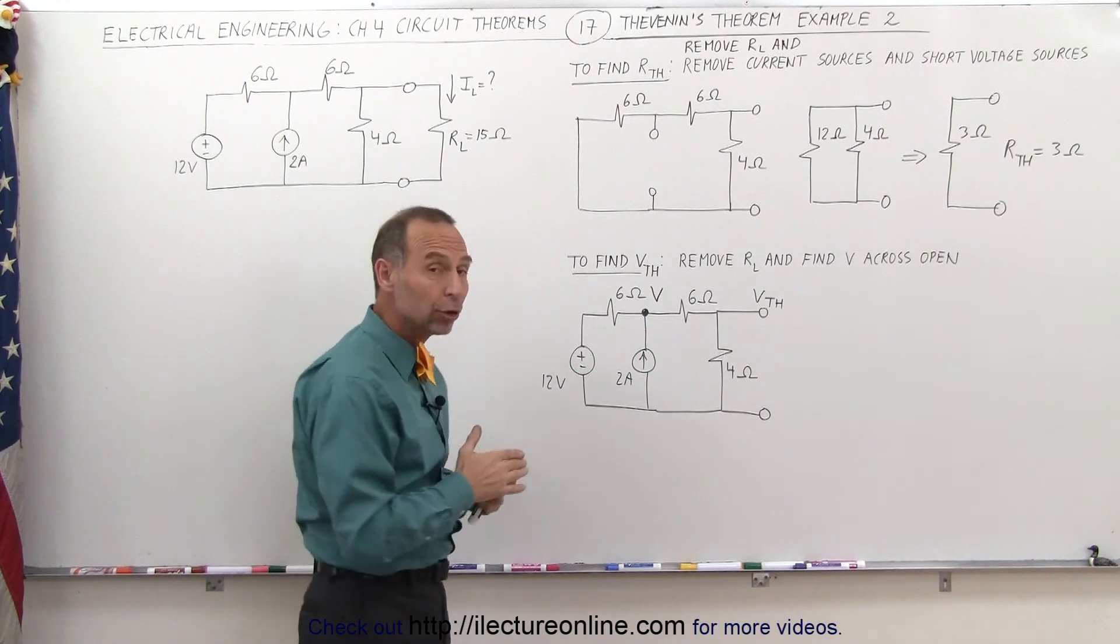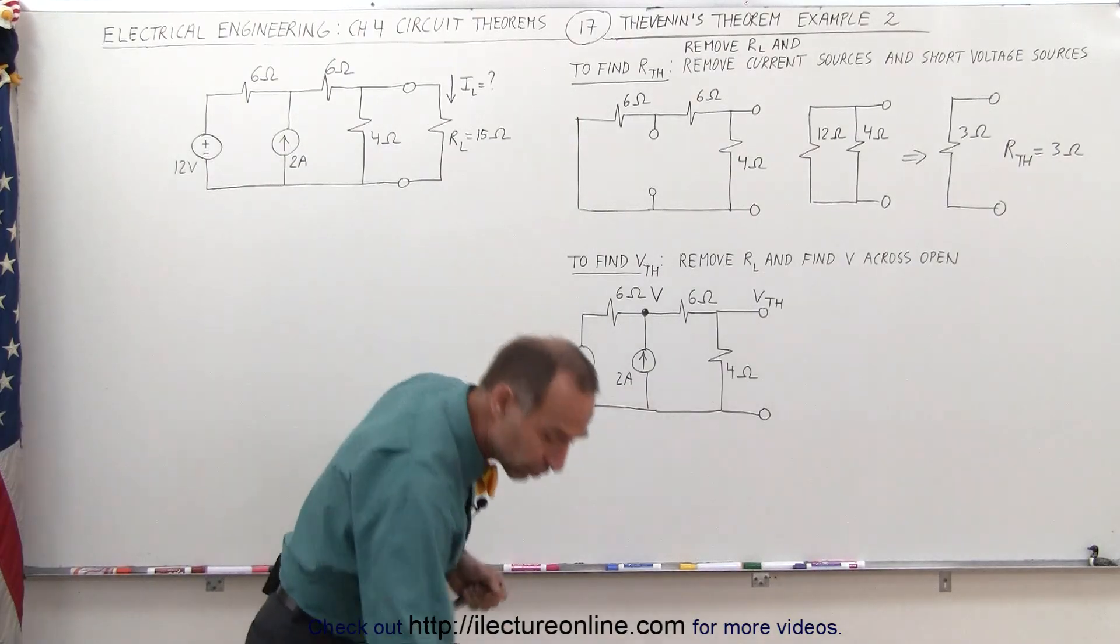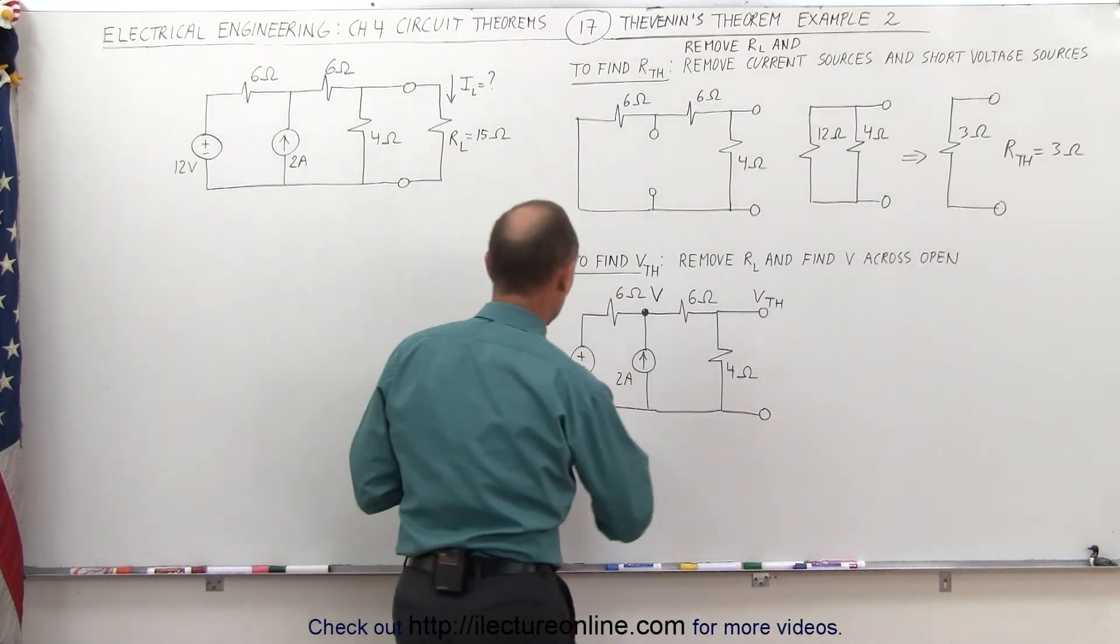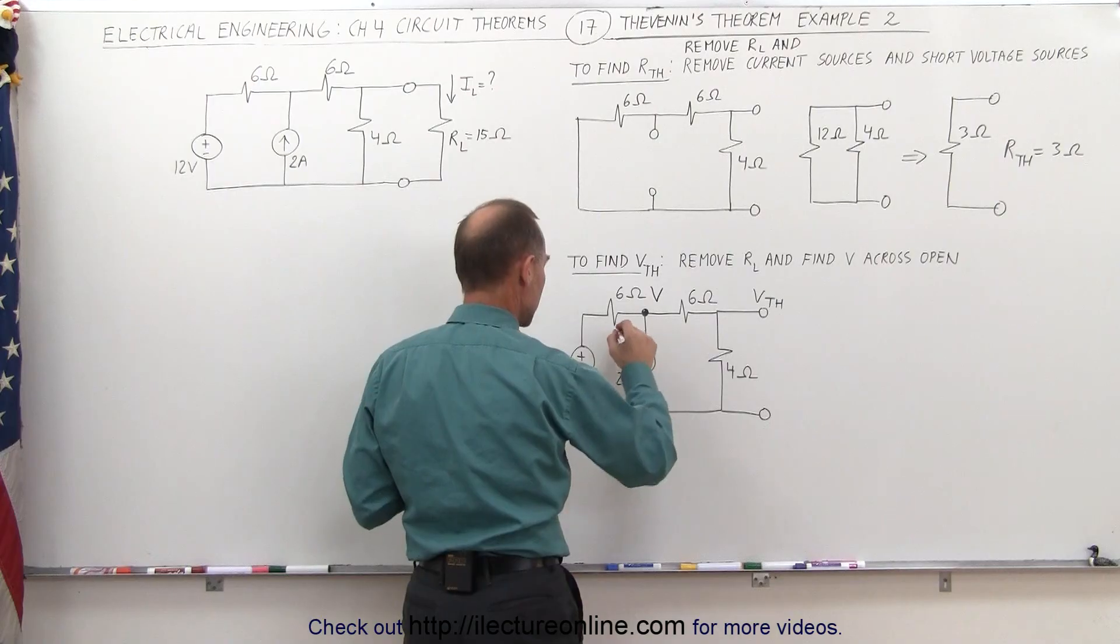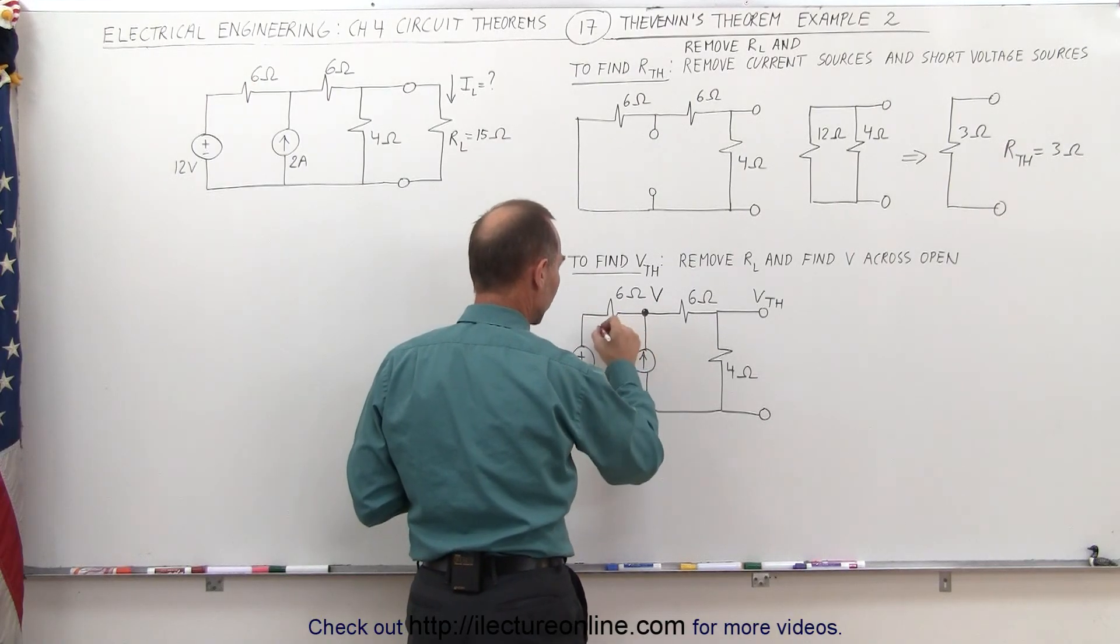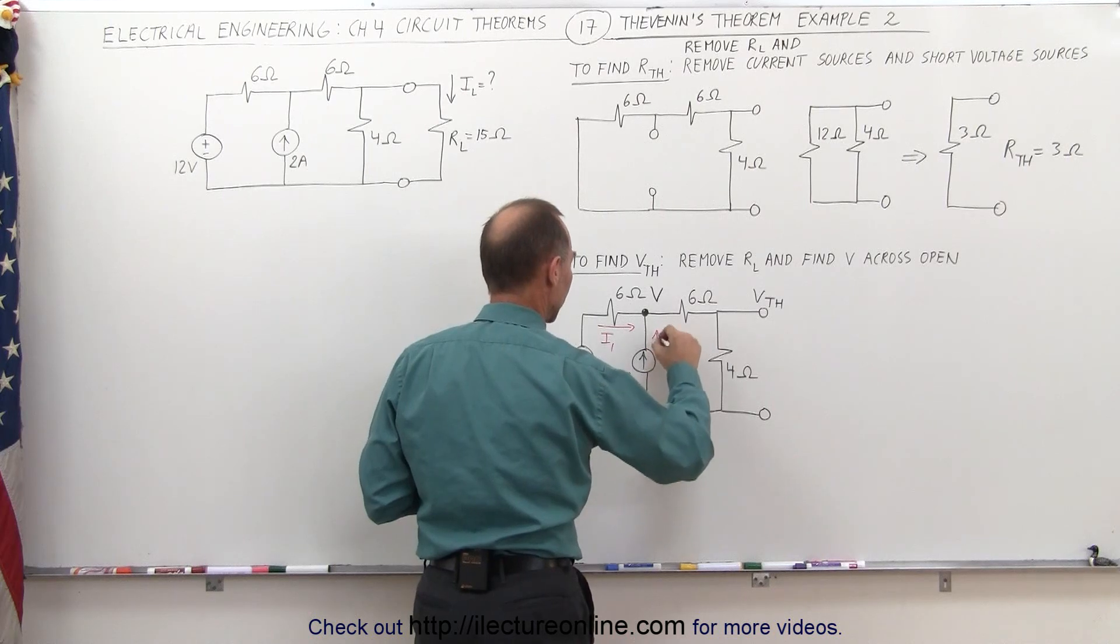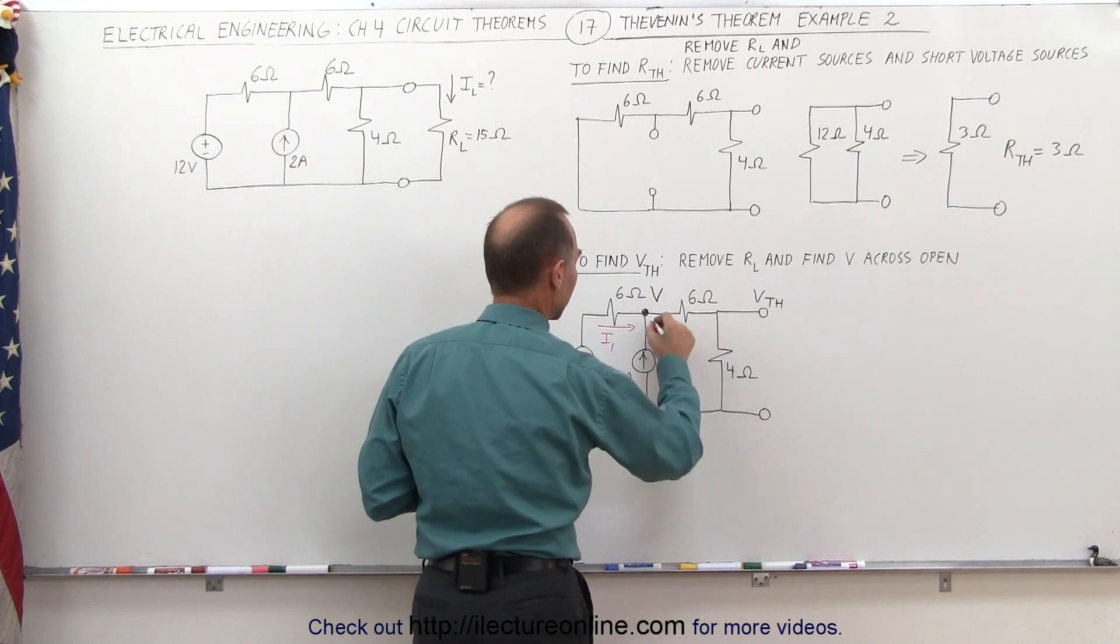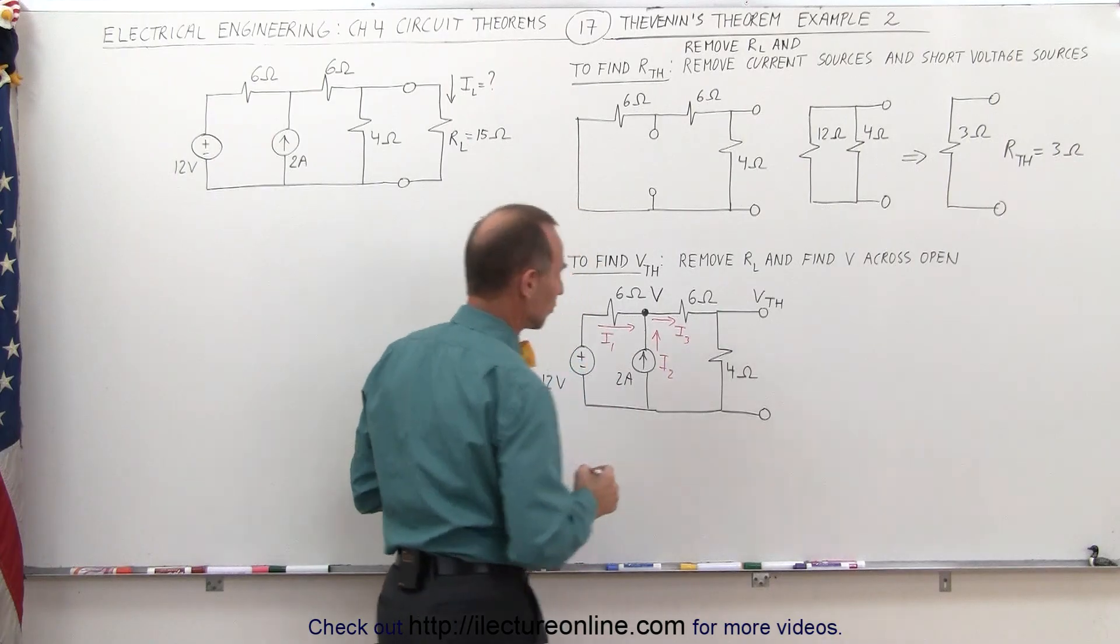Notice all the currents entering and all the currents leaving that node. Using a red pen, I can assume that there's a current being driven by this voltage source, so let's say there's a current I1 in this direction, there's a current I2 in this direction, and then I'm assuming there's a current I3 in this direction.